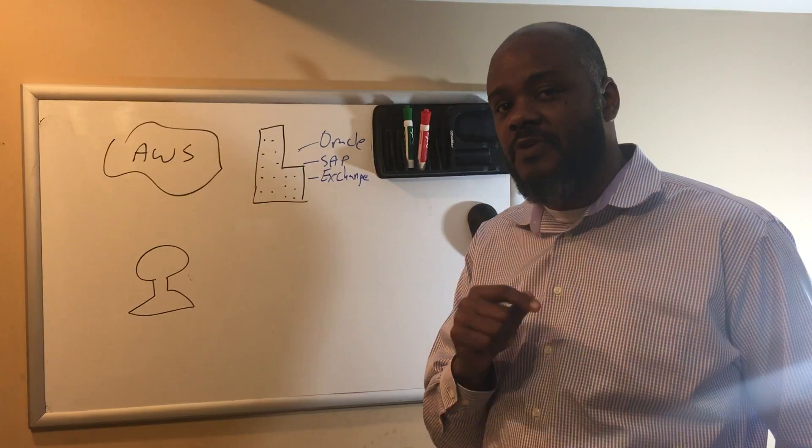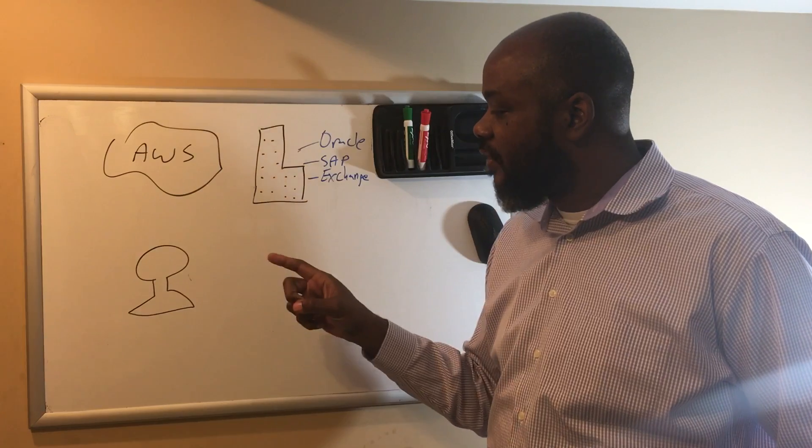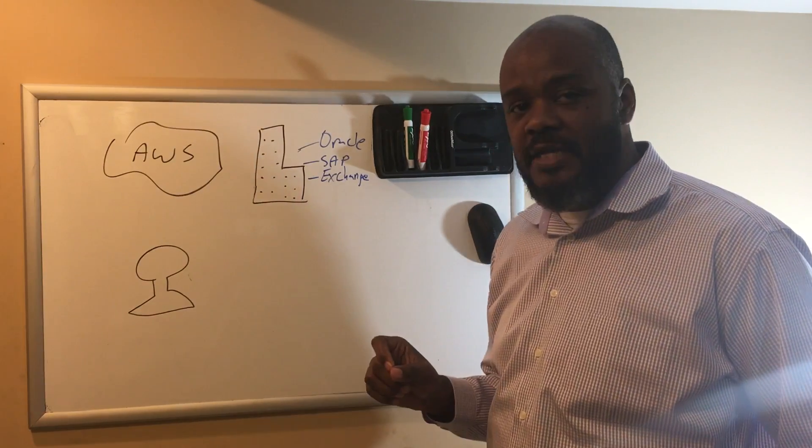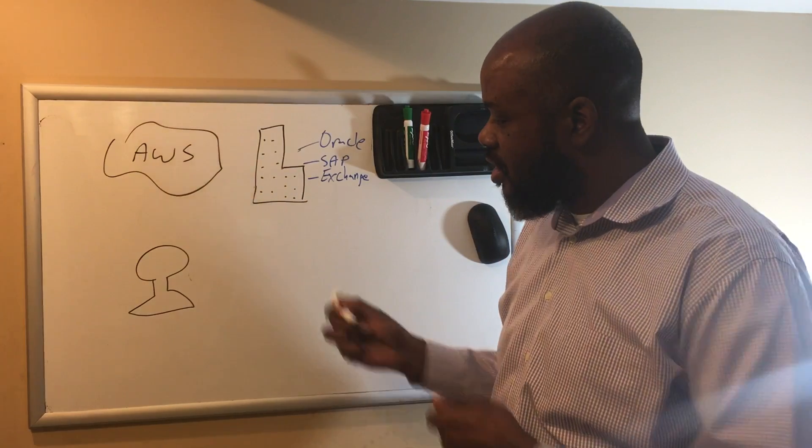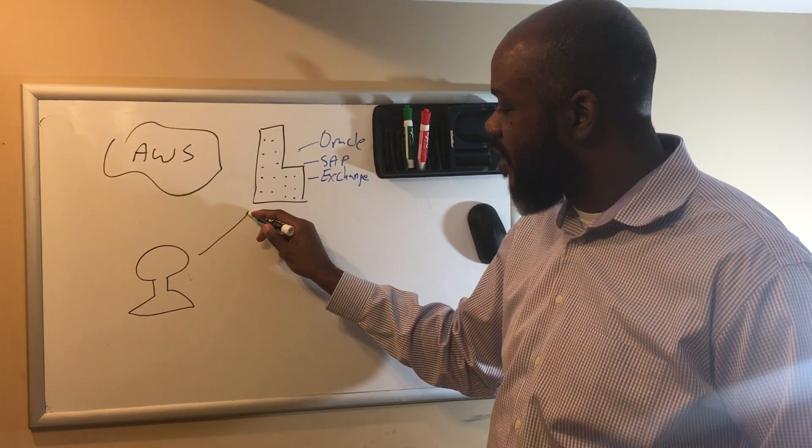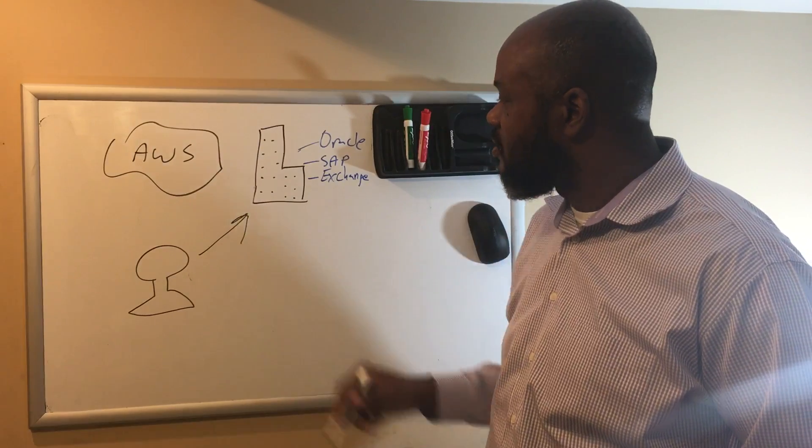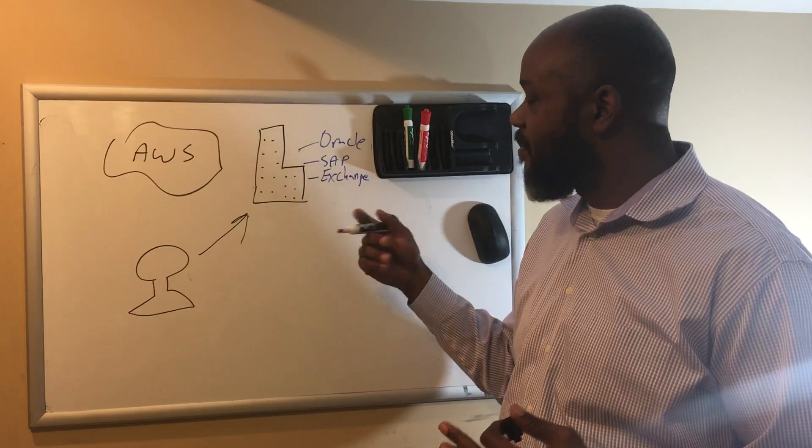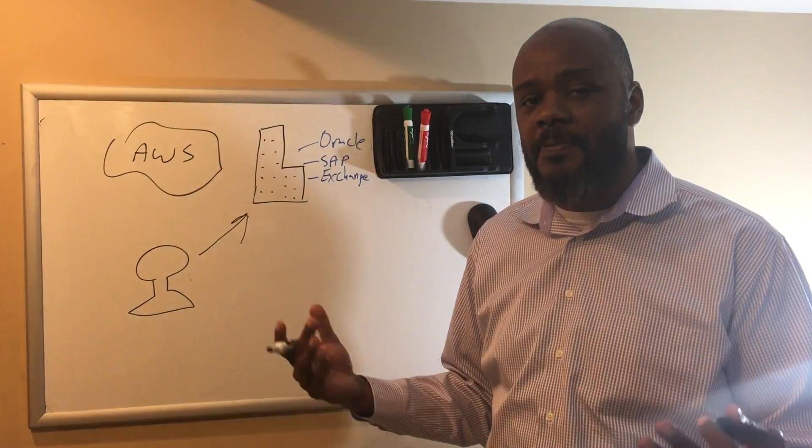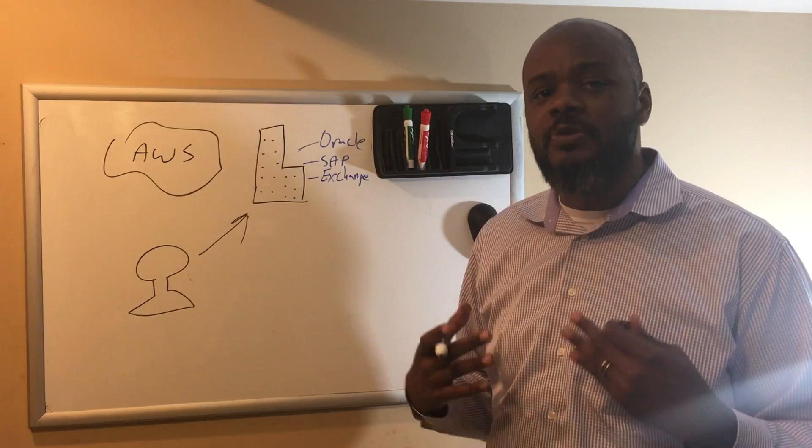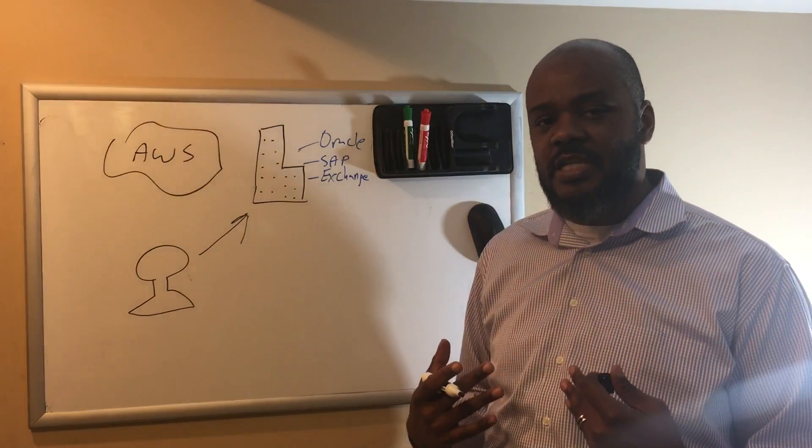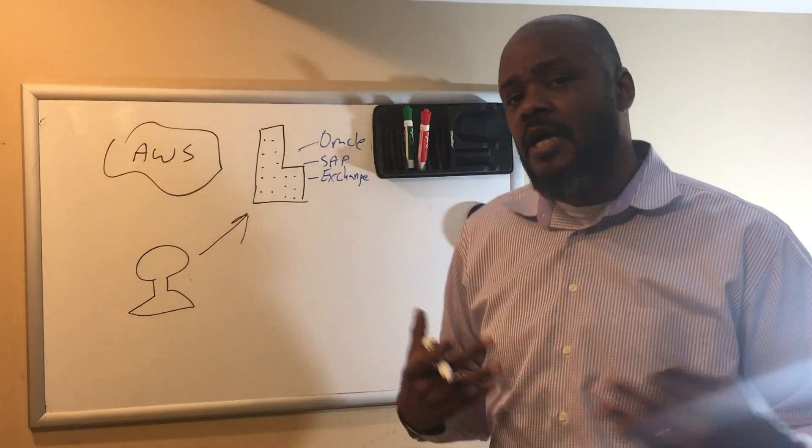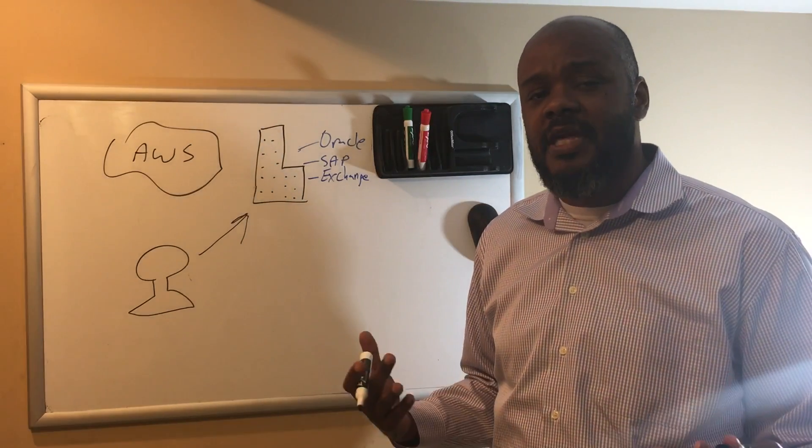Let's talk about the models of consumption in the enterprise first. First, we have the user and how they consume enterprise services. Traditionally, our user would go to the enterprise data center to consume services. Oracle, SAP, Exchange, traditional MRP type of applications, those fed clients. They'd be at their desktop. They connect to the enterprise data center, consume these services.